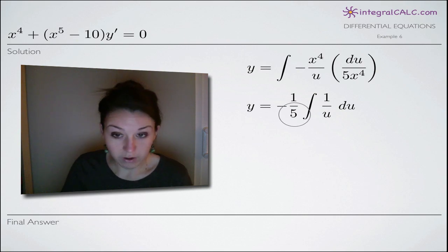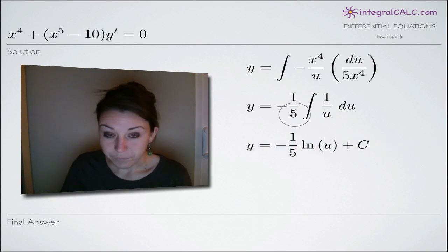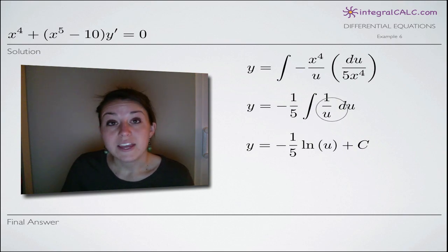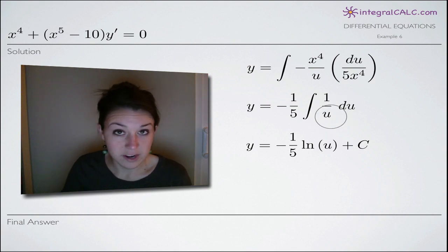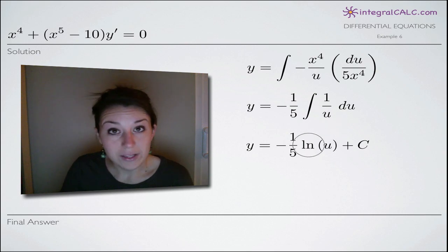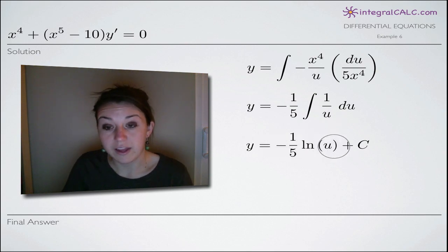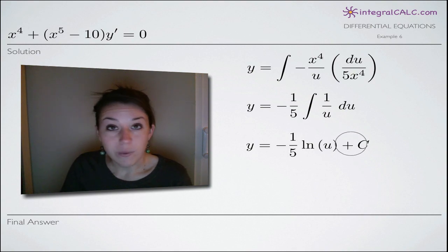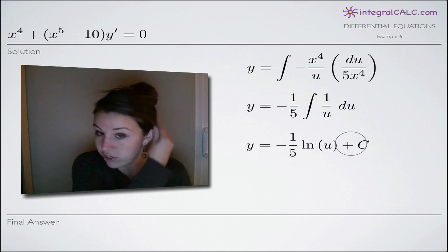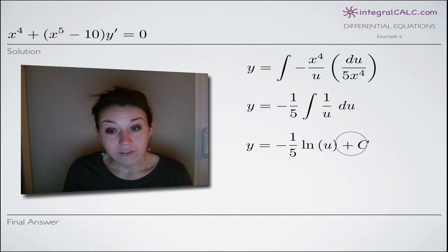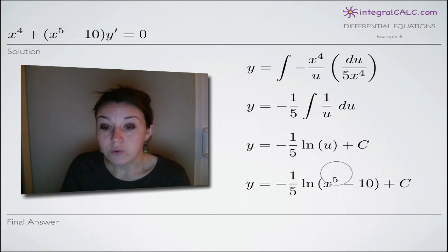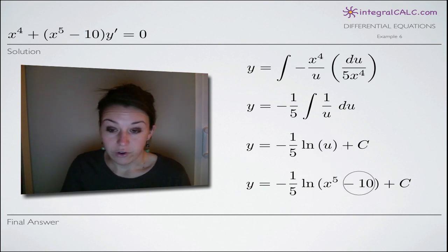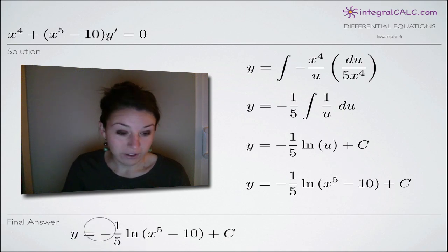We pull out the constant negative one-fifth. The integral of 1 over u is the natural log of u — ln of the denominator. So we have negative one-fifth times ln of u, and then we add c to account for the constant of integration. Now all we have to do is substitute back in for u. Recall that u equals x to the 5th minus 10, so we make that substitution to get our final answer.